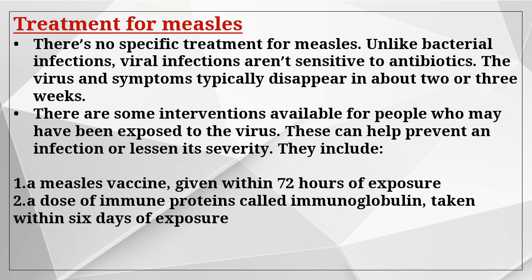There is no specific treatment for measles. Unlike bacterial infections, viral infections are not sensitive to antibiotics. The virus symptoms typically disappear in about 2 to 3 weeks. However, there are some interventions available for people who may have been exposed to the virus. These can help prevent an infection or lessen its severity, including a measles vaccine given within 72 hours of exposure, and a dose of immune protein called immunoglobulin taken within 6 days of exposure.